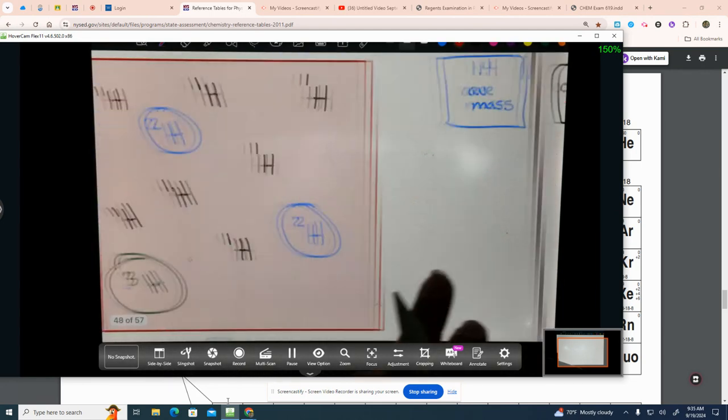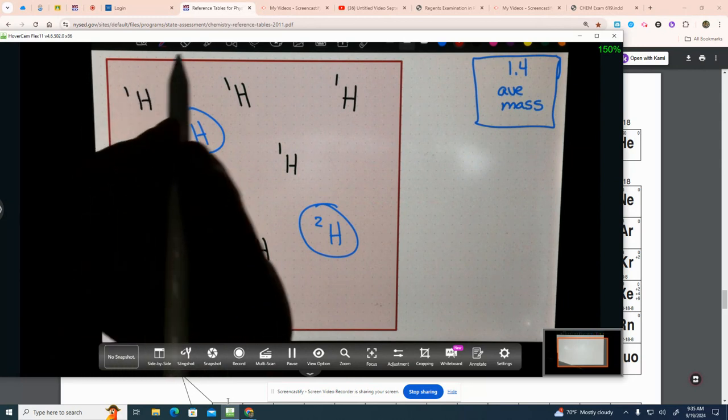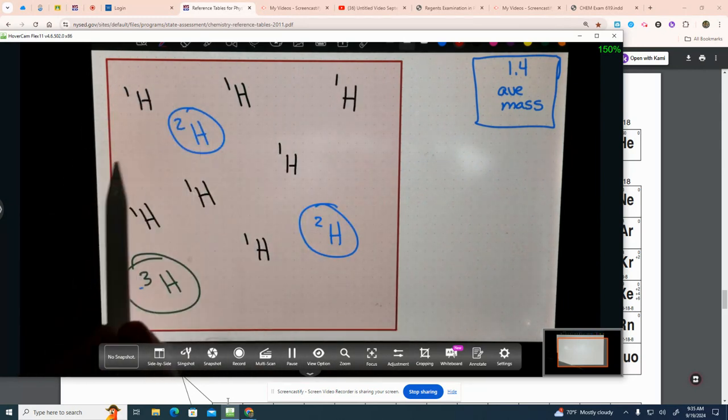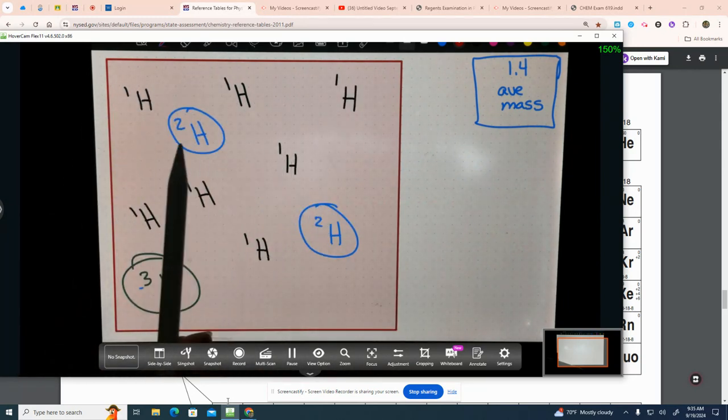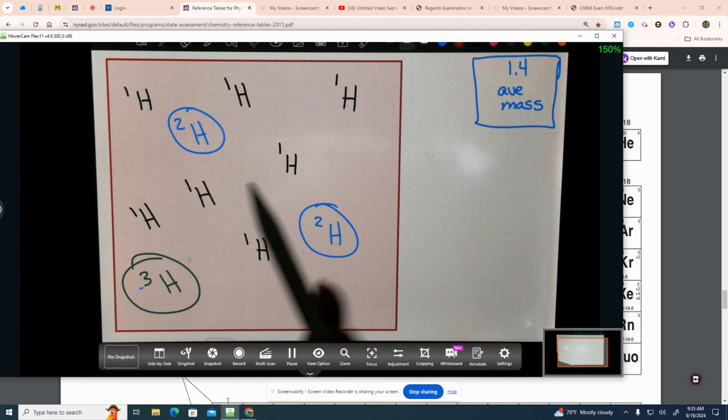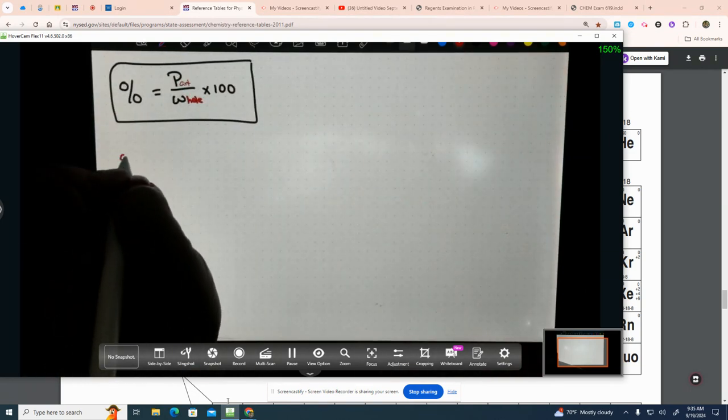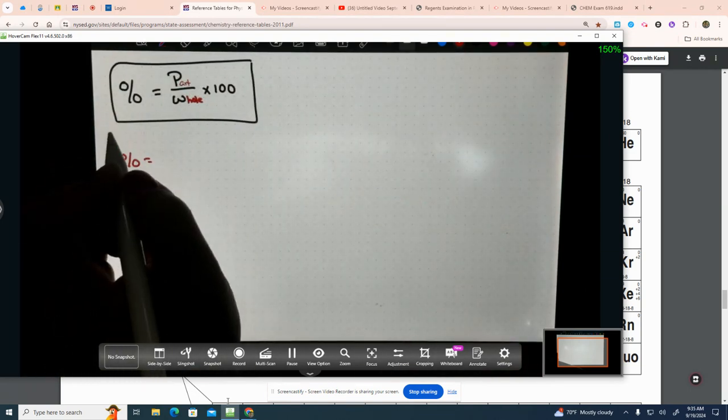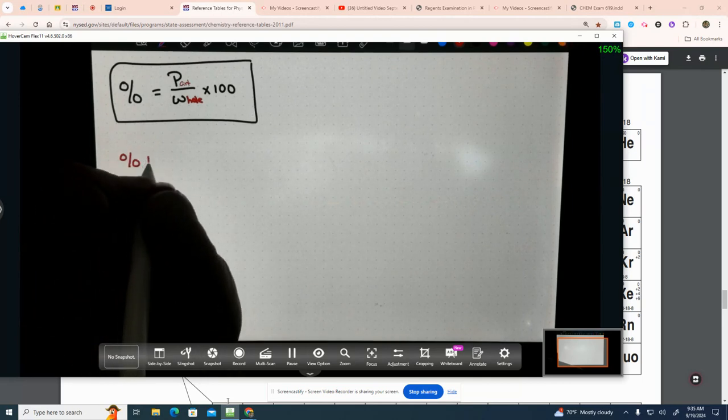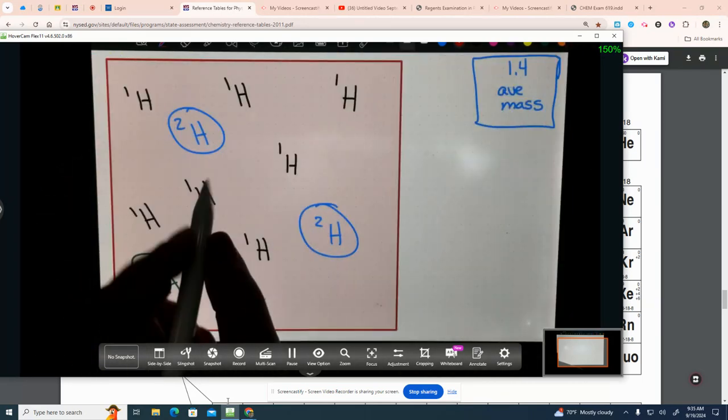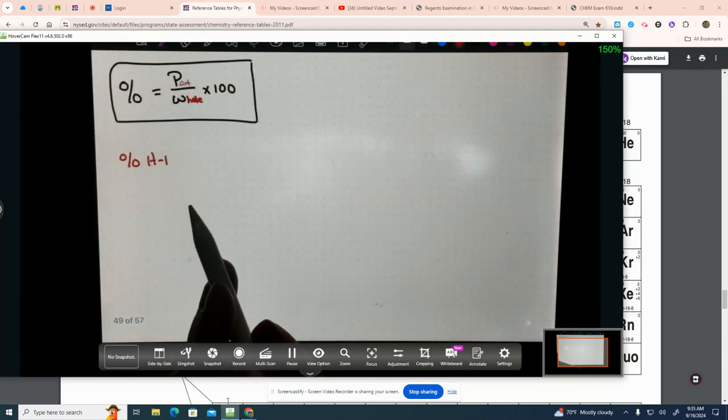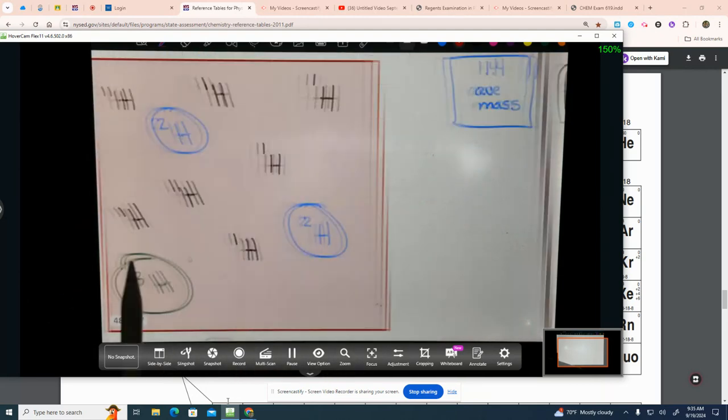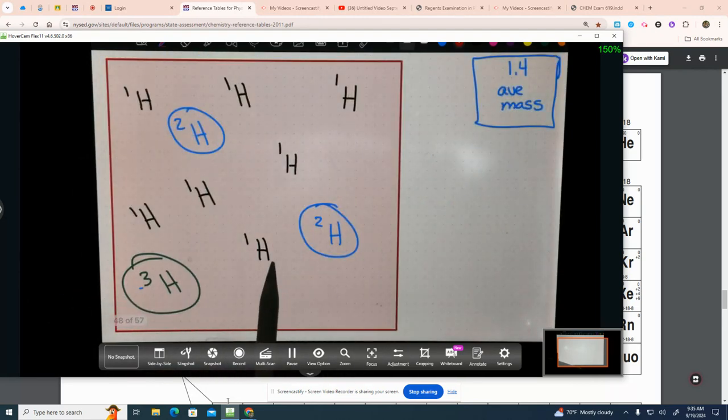Let's look at our sample. What is the whole? The whole is the total number of hydrogen atoms that I have, which I made 10 to make our life really easy. So, if I want to find the percent of H-1, how many of them are H-1s? Seven, right?